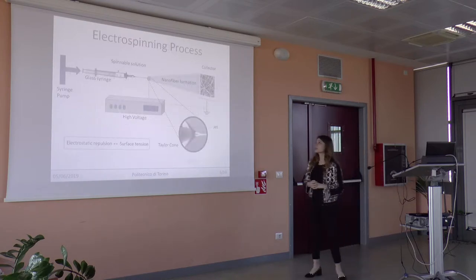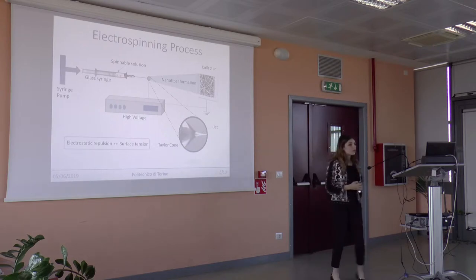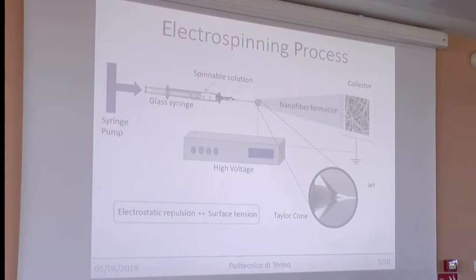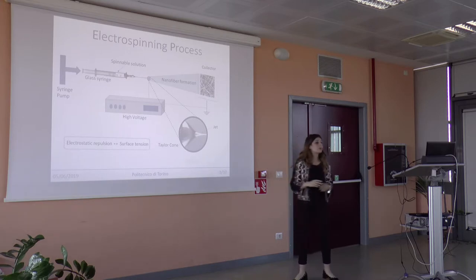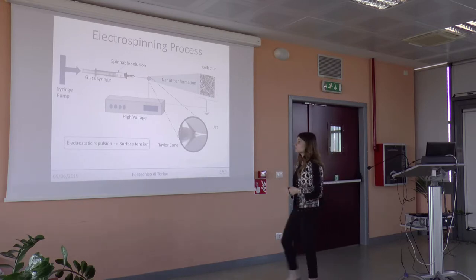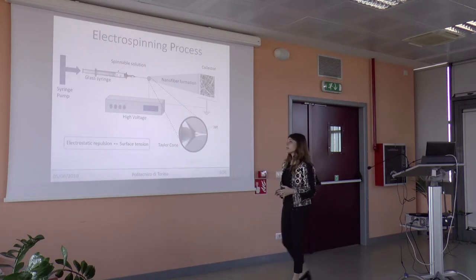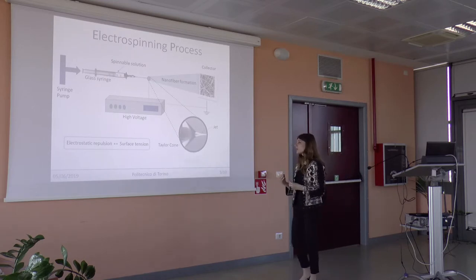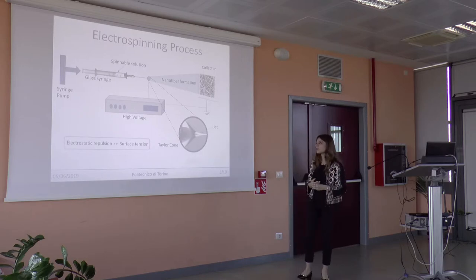This figure shows the electrospinning setup. It consists of three parts: the syringe pump, the high voltage generator, and the ground collector plane. The spinnable solution is set in the glass syringe, and then, thanks to the syringe pump, a droplet appears on the tip of the syringe. A high voltage is then applied, the electric field increases, and the droplet becomes a Taylor cone.